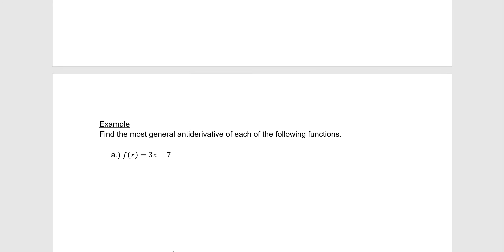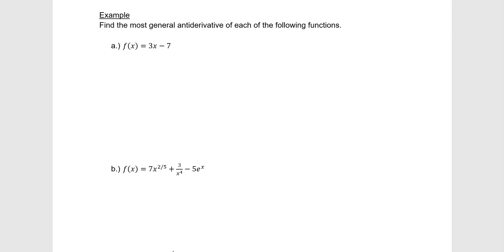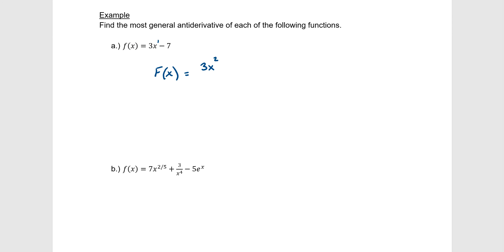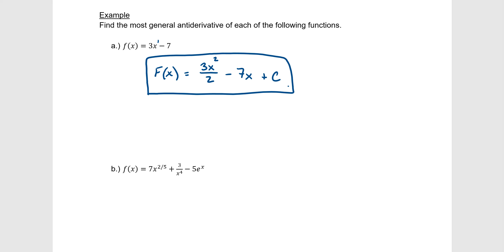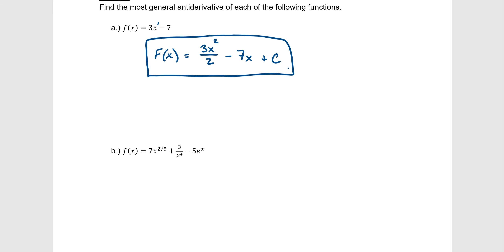Let's see some examples using our rules. Find the antiderivative of f(x) = x − 7. Both terms use the reverse power rule. For x (exponent 1), add one to get exponent 2, divide by 2: we get x^2/2. For the constant −7, multiply by x: we get −7x. So F(x) = x^2/2 − 7x + C. Once you know the formulas, it's the same difficulty as taking the derivative, just in reverse.